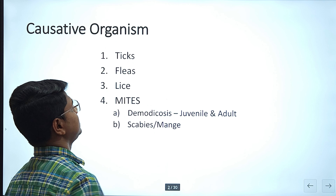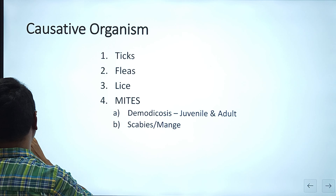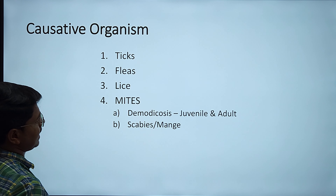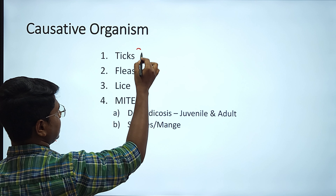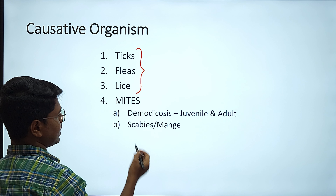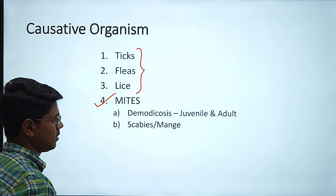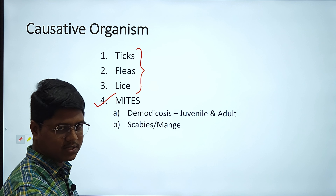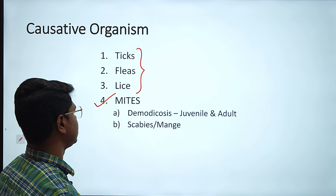What are the causative organisms? The causative organisms can be tick, flea, lice, and mites. Tick, flea, and lice we will discuss in one category and we will discuss mites in another category. In the same lecture, we will be covering all of these.